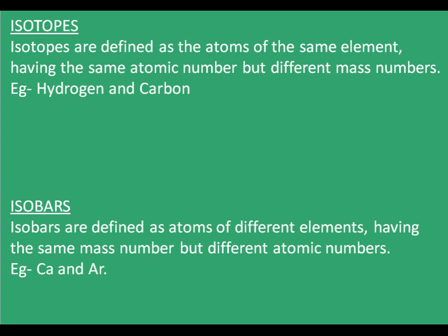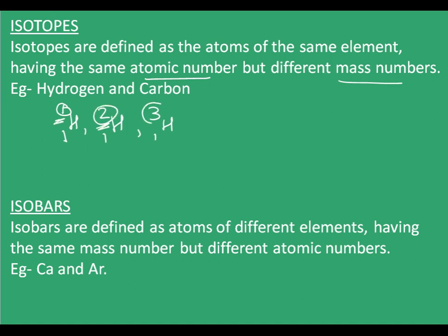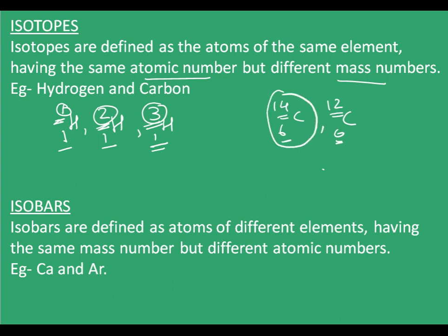Isotopes are defined as atoms of the same element having the same atomic number but different mass numbers. Hydrogen has three isotopes: protium, deuterium, and tritium. Protium is ¹H₁, deuterium is ²H₁, and tritium is ³H₁. Protium has mass number 1, deuterium has mass number 2, and tritium has mass number 3, but in all of these the atomic number is the same, that is 1. In the case of carbon, two isotopes are present in nature: ¹⁴C₆ and ¹²C₆. Carbon-14 is used in carbon dating to determine the age of fossils, and this carbon-14 is radioactive.